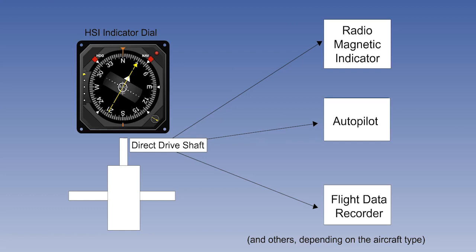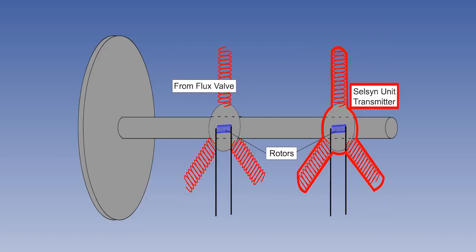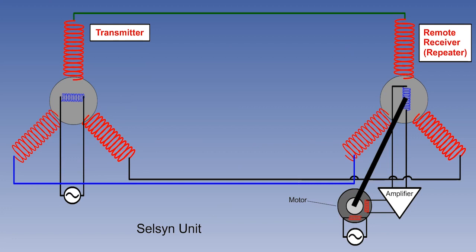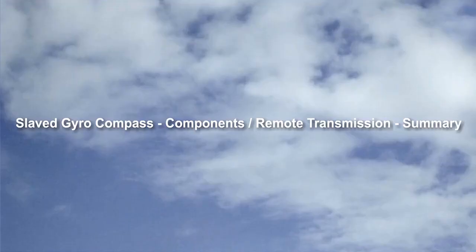The gyromagnetic compass can be used to transmit heading information to other instruments. This is done by a CELSYN unit, in which the transmitter is a stator-rotor combination with the rotor on the compass indicator driveshaft. The receiver, or receivers, are another stator and rotor combination, in conjunction with an amplifier and an electric motor. This completes all the lessons on the gyromagnetic compass.